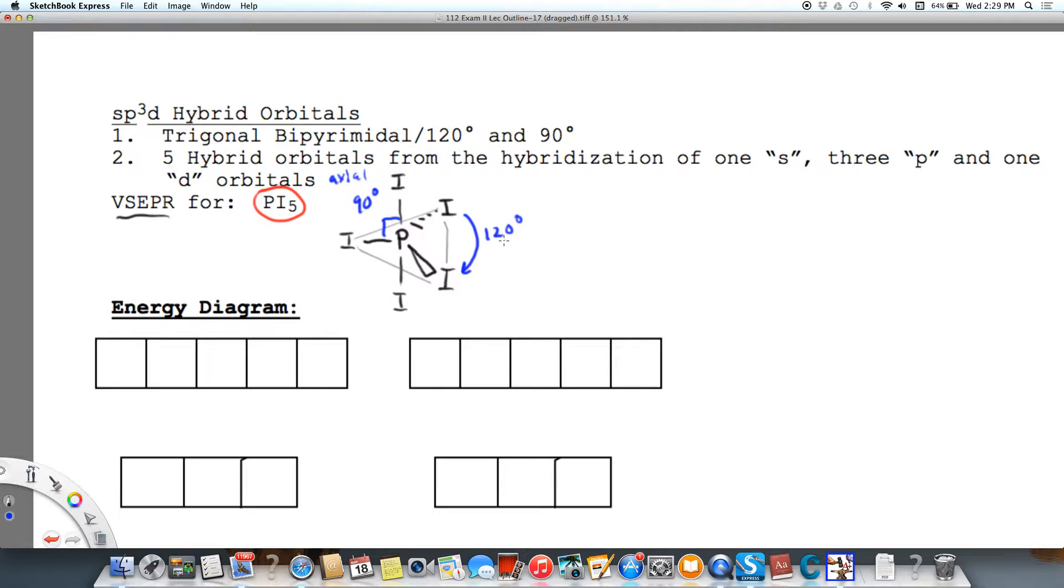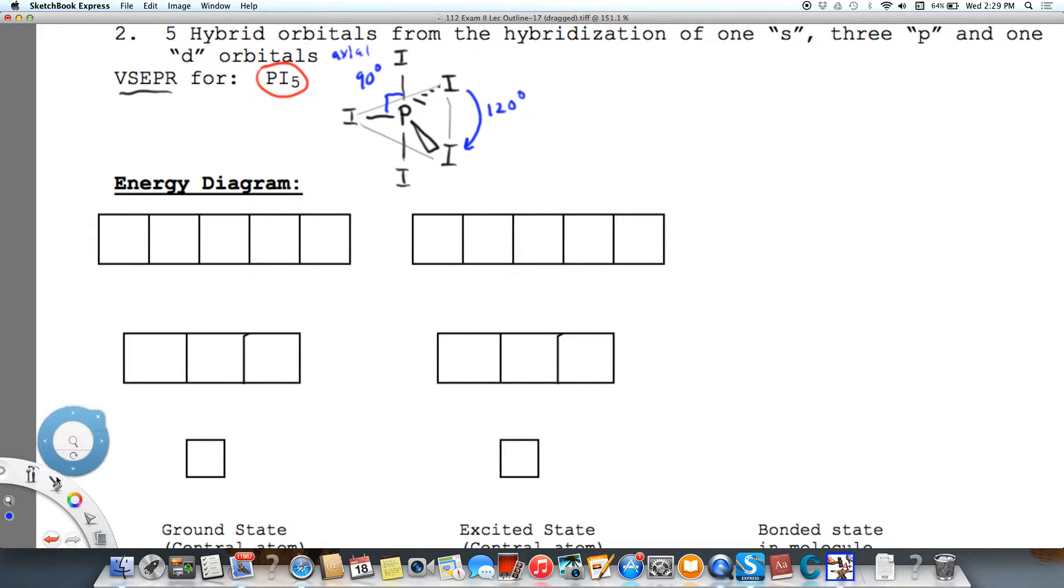So let's draw the energy diagram for this, for the hybridization. Phosphorus, we know has some 3s electrons. We're going to draw those, and then it's got one, two, three, three p electrons. So it's got five valence electrons.